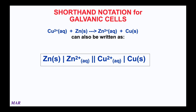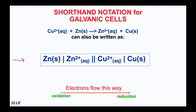Writing out a galvanic or voltaic cell can be a big job, so there's a shorthand notation which is important to know. The copper 2+ plus zinc going to zinc 2+ plus copper reaction can be written in shorthand notation. In this notation, electrons are moving from left to right, from the oxidation to the reduction.